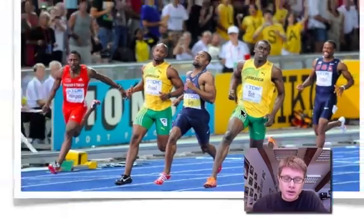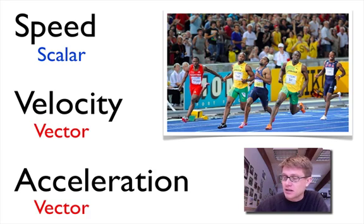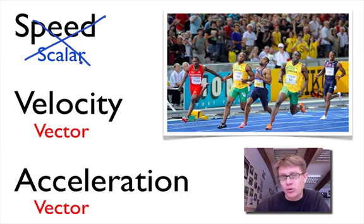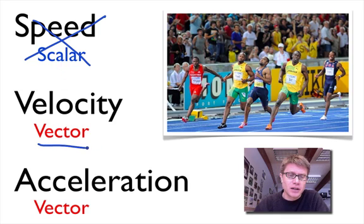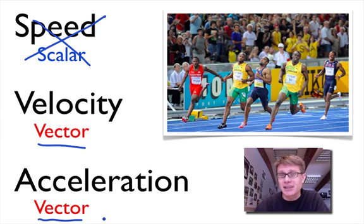If you've ever seen Usain Bolt run from Jamaica, well first of all it's highly impressive, but you have an understanding of how fast fast really is. In physics we deal with really just two of these. Speed is a scalar quantity and you've used speed your whole life — you say my car can go 20 miles an hour or 200 miles an hour. But velocity and acceleration are vector quantities, so they include not only the magnitude but also the direction at which velocity or position might be changing over time.